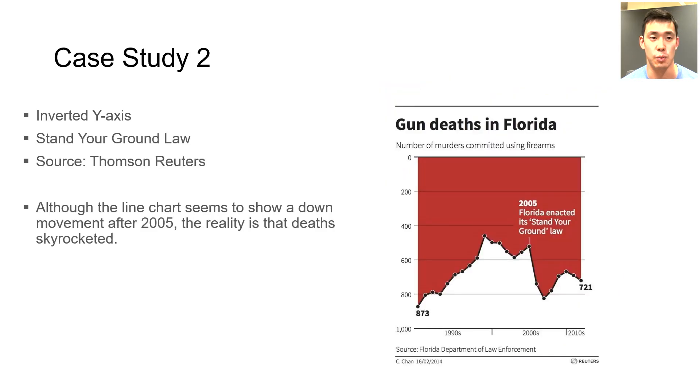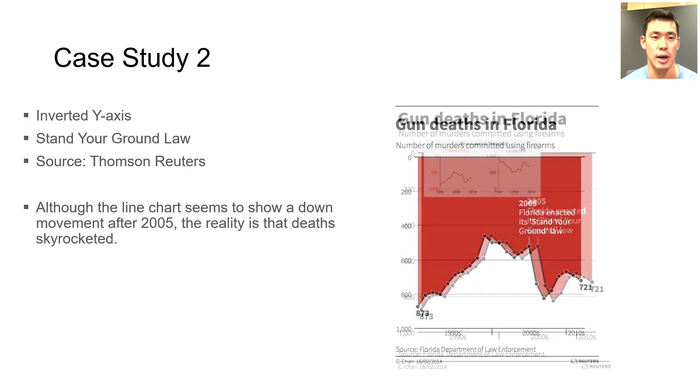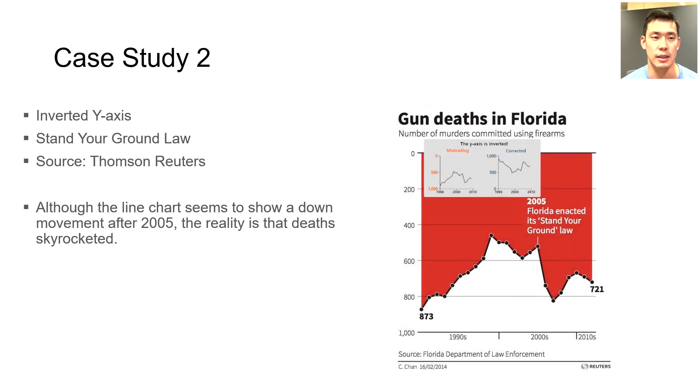Another case we will explore is the Thomson Reuters graphic on gun deaths in Florida. This line chart features an inverted y-axis. Although the line chart seems to show a down movement after 2005, the reality is that deaths skyrocketed after passing a Florida Stand Your Ground law.